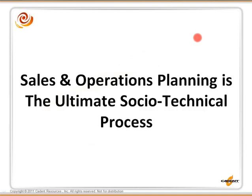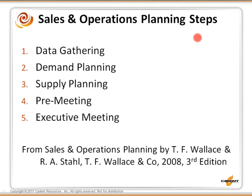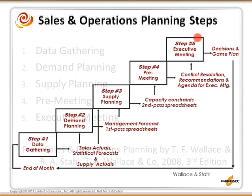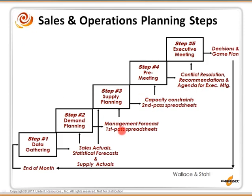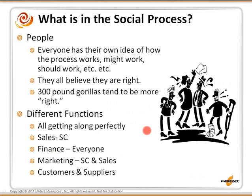Sales and operations planning is the ultimate socio-technical process. Looking at the Wallace and Stahl approach — data gathering, demand planning, supply planning, pre-executive meeting, executive meeting — and look at the number of spreadsheets originally in their design: first pass spreadsheet, second pass where you look at management forecast, capacity constraints, and conflict resolution, all kind of done outside the system. Many companies have done a good job bringing this within the ERP. The social process is all about people — everyone has their own idea of how the process works, might work, or should work, and they all believe they're right. Our organizations sometimes have 300-pound gorillas that tend to be right just by virtue of being 300-pound gorillas.